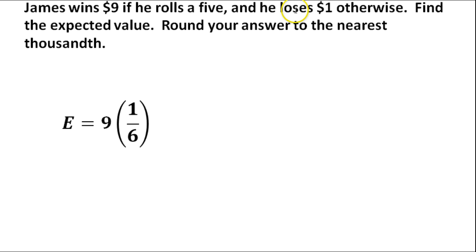But it also says that he's going to lose $1 if he rolls basically anything else. So he's going to lose $1, meaning we're going to subtract $1. Minus $1, times the probability that he's not going to roll a 5.